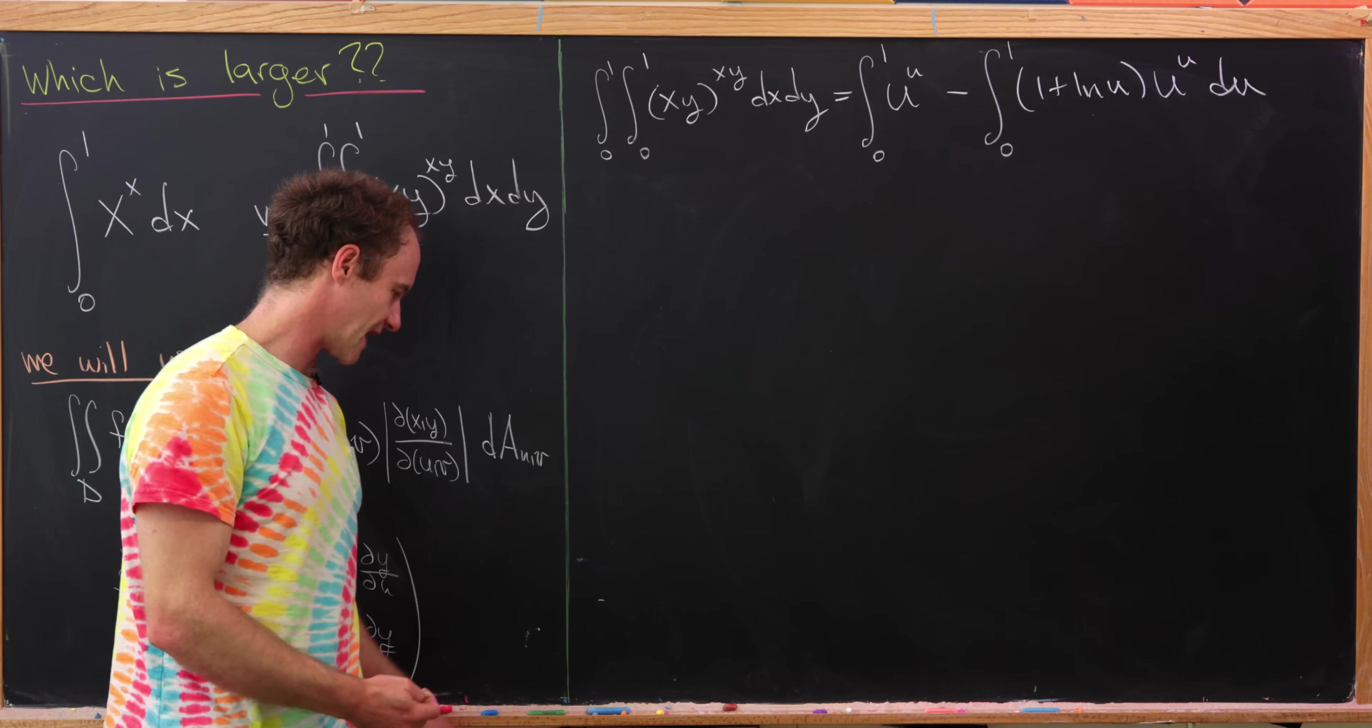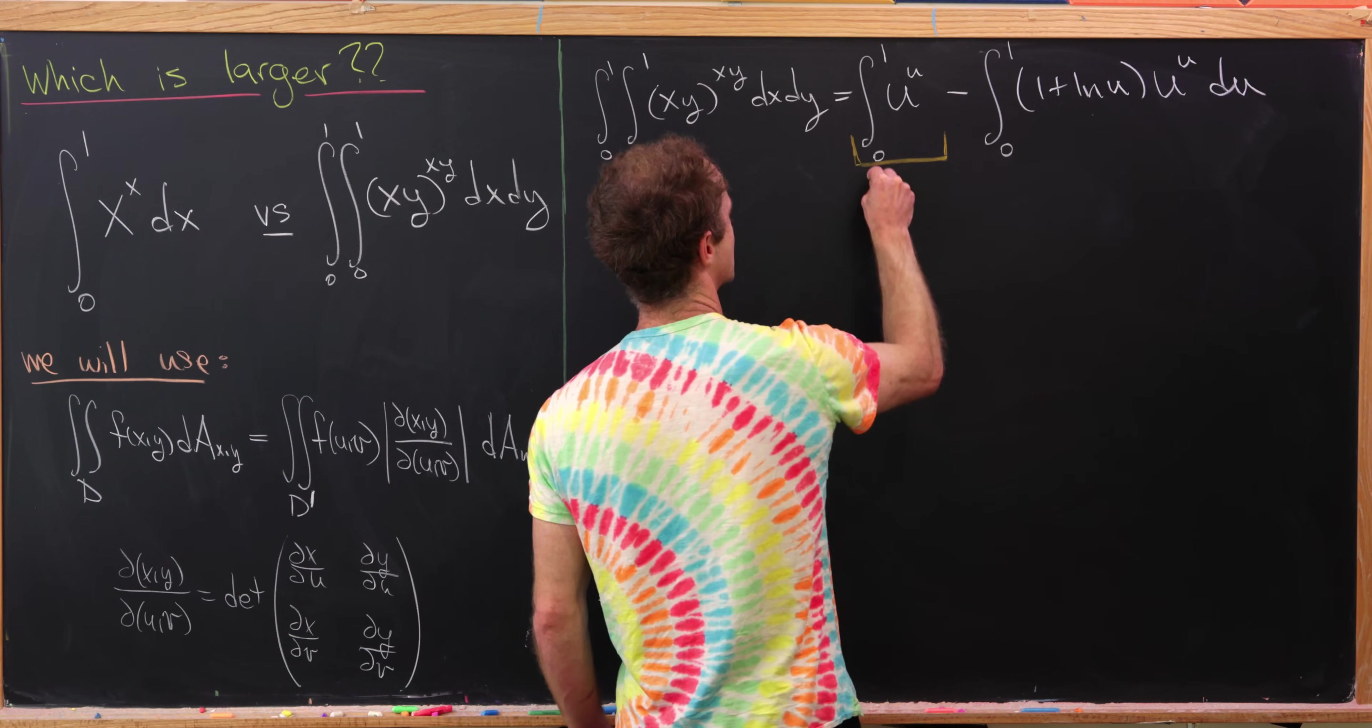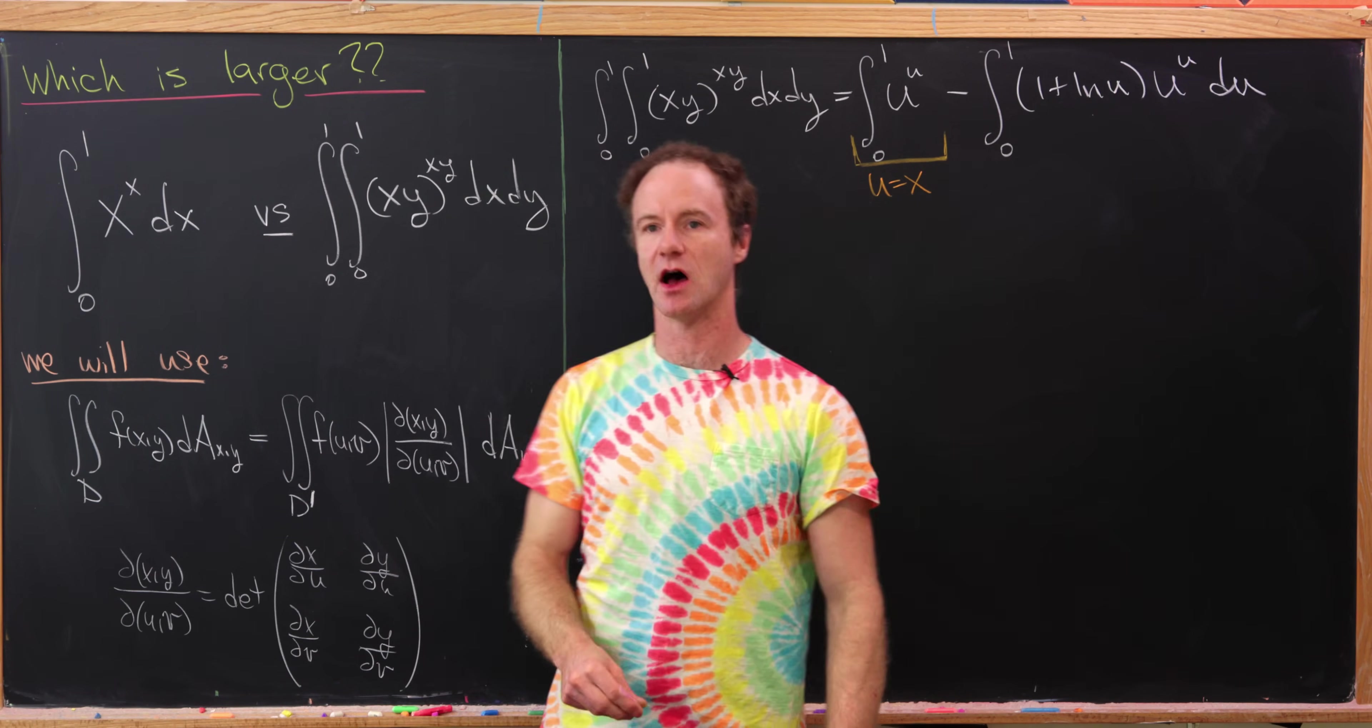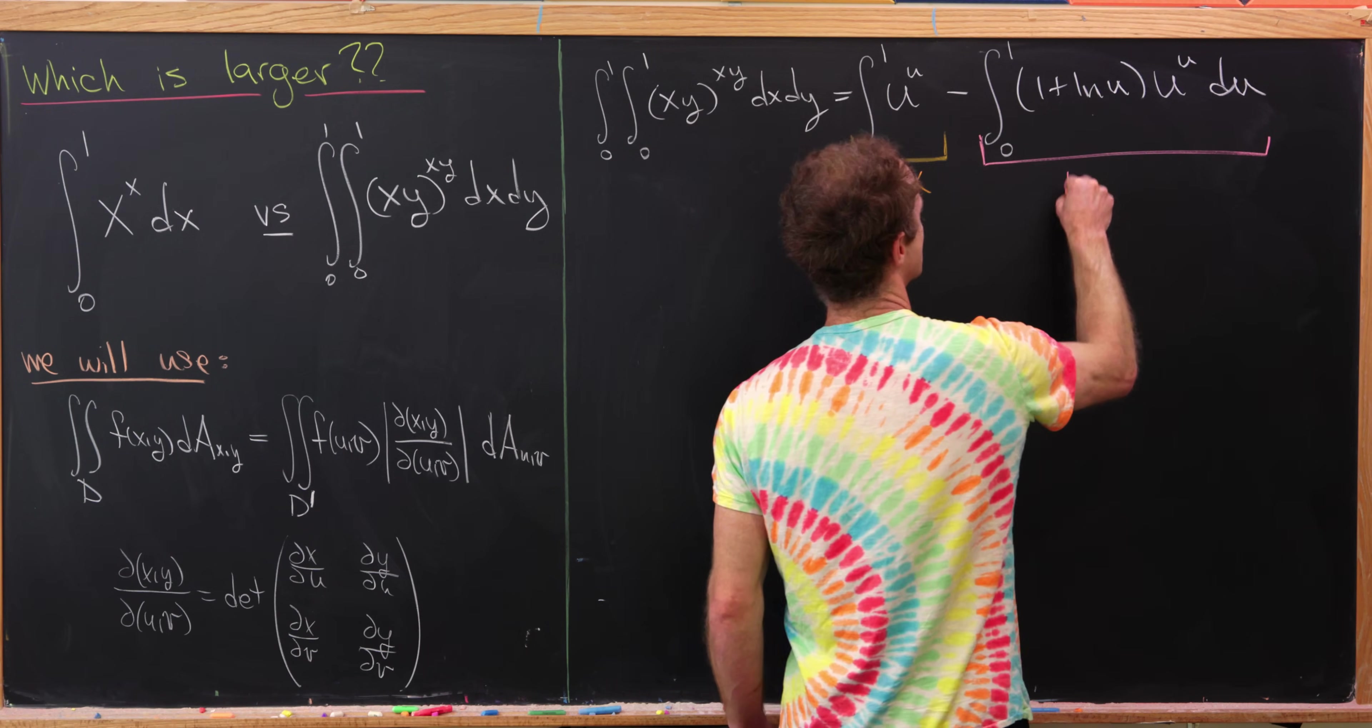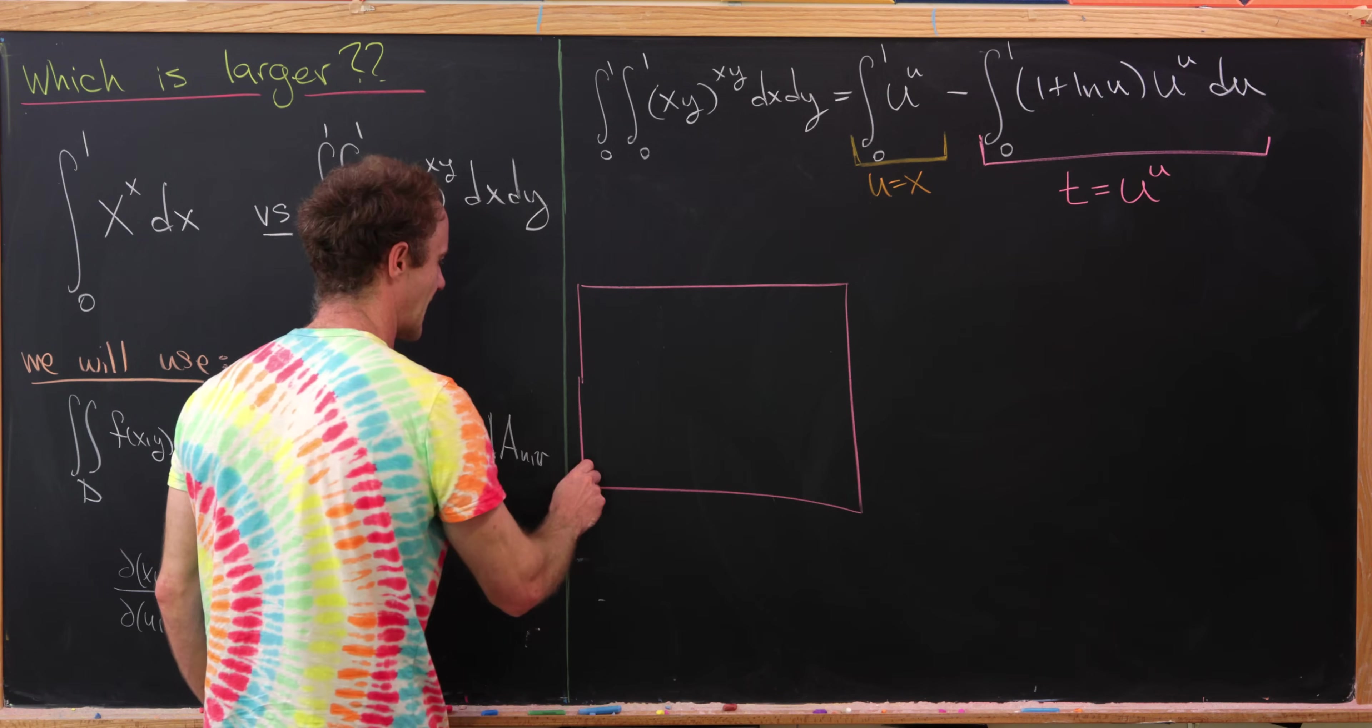So now let's bring that up to the top and then we'll finish it off. This is where we ended on the last board. So now I'm going to do a change of variables in both of these cases. For this first integral, I'm going to make a very simple change of variables where I just set u equal to x. That's just to put it back so it looks exactly like this other integral that we're working with. And then for this second integral, I'll use maybe the substitution, which is t equals u to the u.